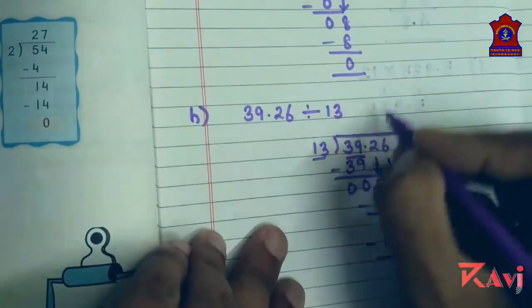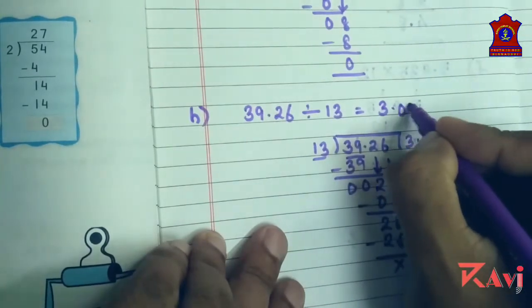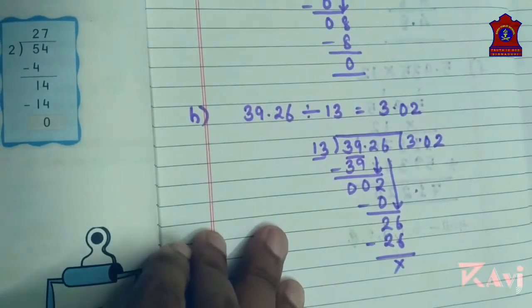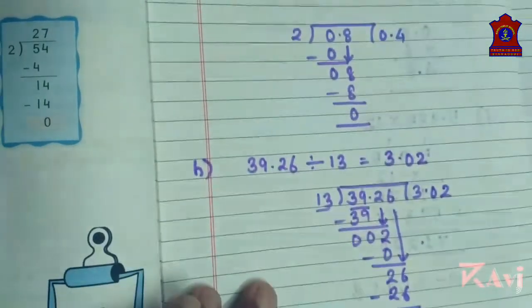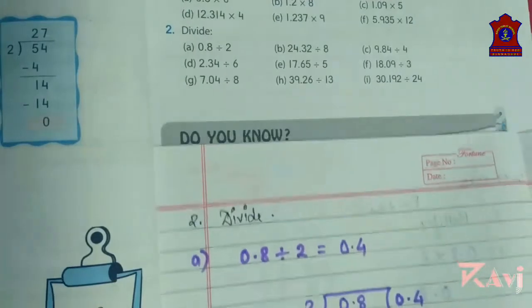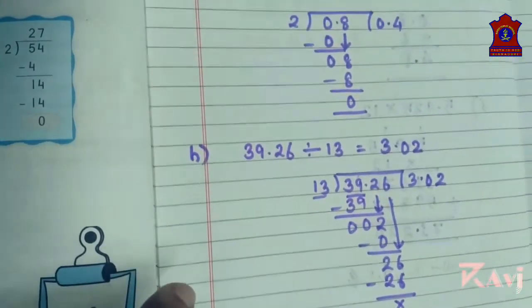So we have got the answer as 3.02. I don't think there is a confusion in this, division and multiplication of decimals. So if you find any confusion in any of the question in multiplication and division of the decimal numbers, you will be asking me in the next online class.